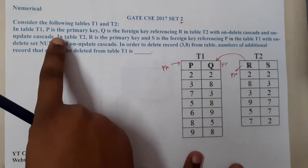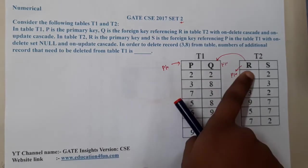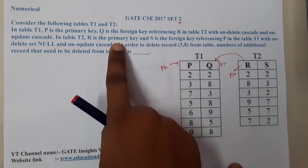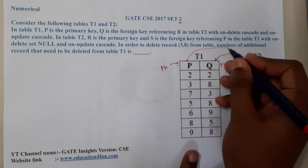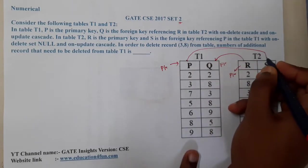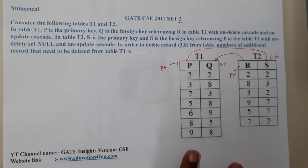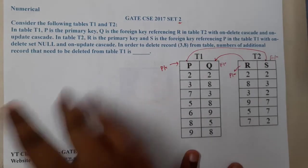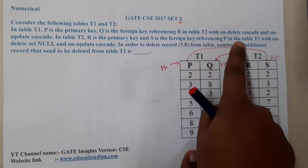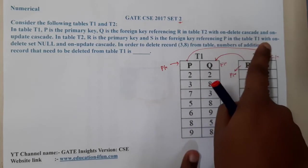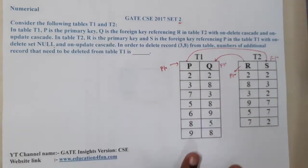Moving on to Table 2: R is the primary key and S is a foreign key for P, referring to P in table T1. These tables are paired with each other — S is a foreign key based on P as the primary key.